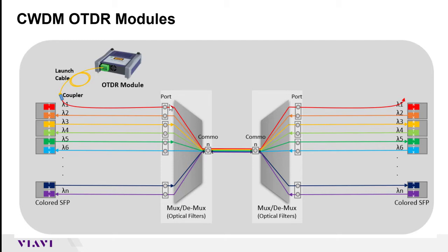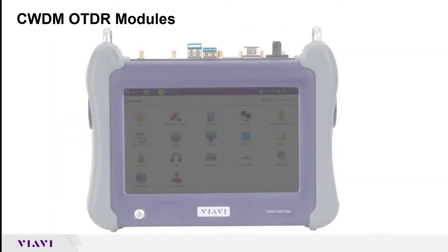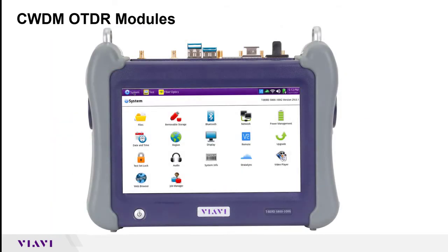By choosing the exact CWDM wavelength, you would be able to pass through both the mux and the dmux on the back side of the dmux on the far side of the fiber run. These modules can be attached to one of our three major tBird platforms: the tBird2000, the tBird4000, or the tBird5800.